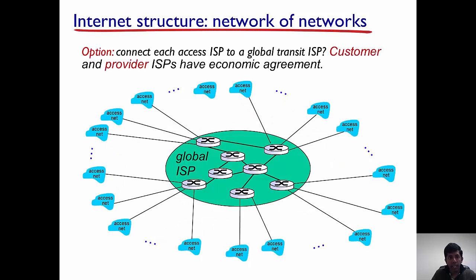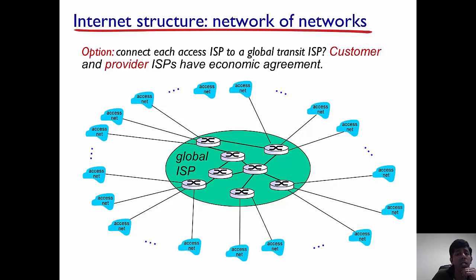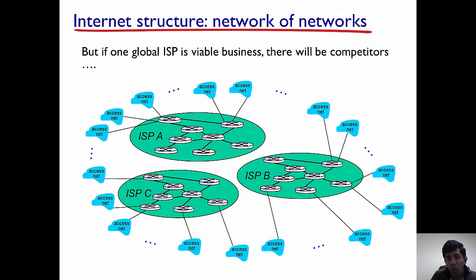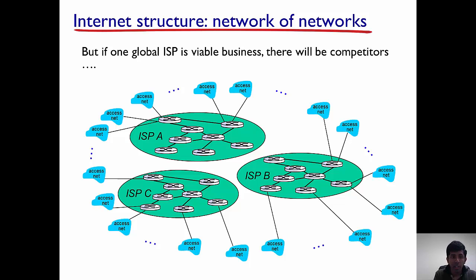So what we can do is have every ISP connect to a global transit ISP. Customers and provider ISPs have some economic agreement with each other to enable this. However, if a single global ISP is making profit, there will be multiple other global ISPs as well, because all of them want a share of the pie. So there are multiple global ISPs, and each access ISP is connected to one of them.